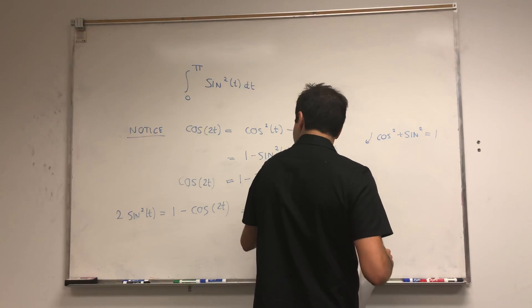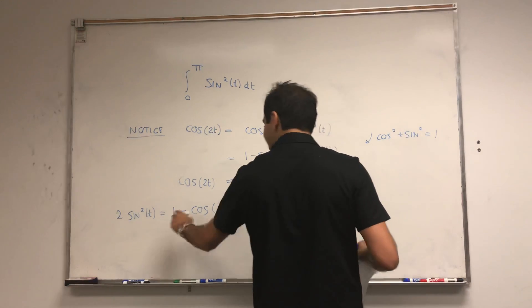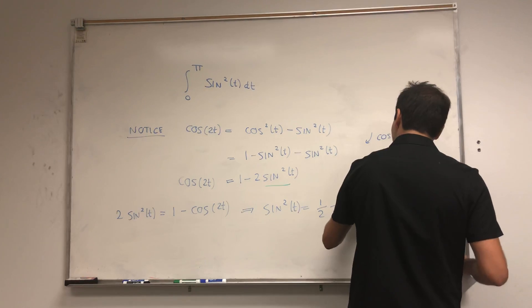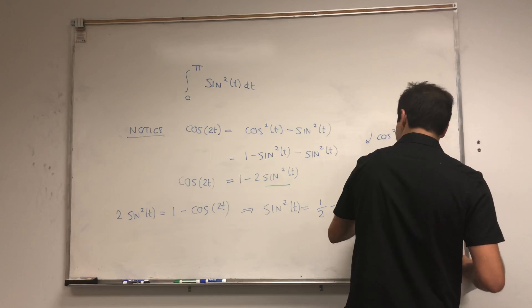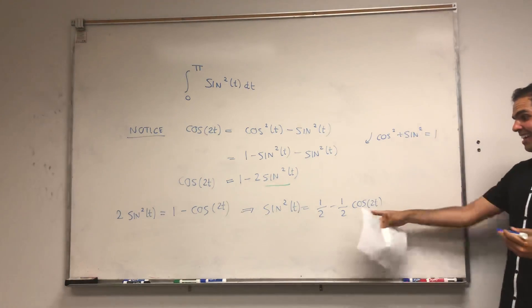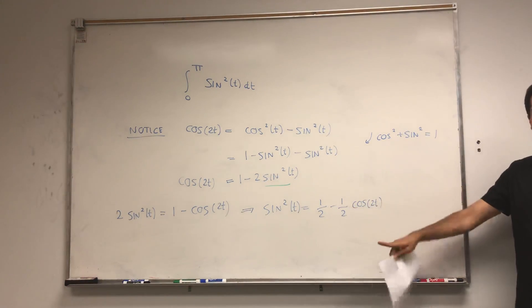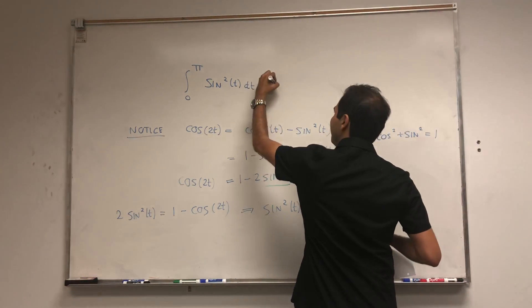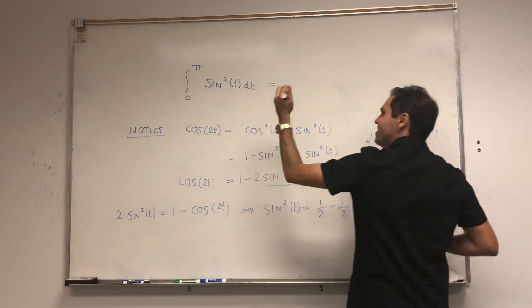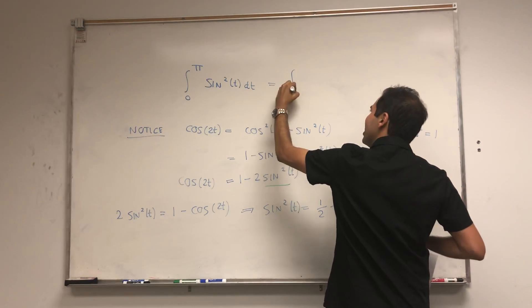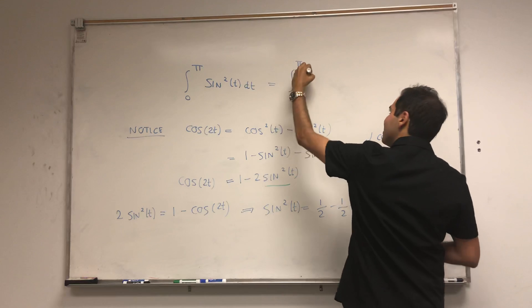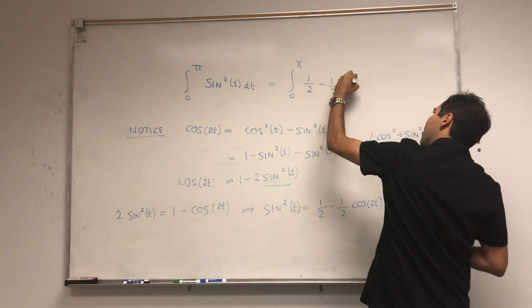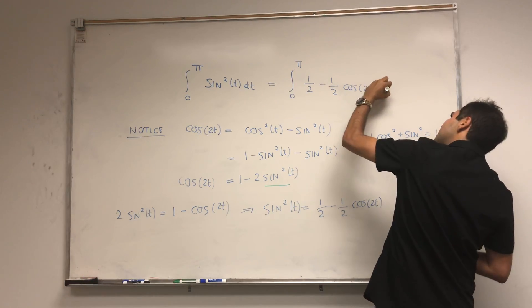So sine squared of t equals one half minus one half cosine of 2t. This identity is the key one that will help us evaluate the integral, because now the integral of sine squared of t is just the integral of one half minus one half cosine of 2t dt.